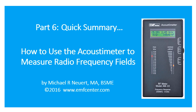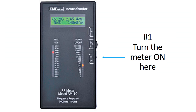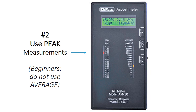This is a quick summary of what we have learned so far about how to use the acoustometer to measure radio frequency fields. Turning on the meter is simple. If you're a beginner, I recommend that you mostly work with peak measurements. There are two types of measurements the meter makes: peak and average. On the meter, the left column of LEDs shows peak levels versus average.